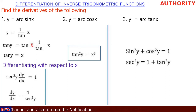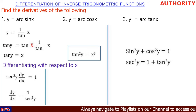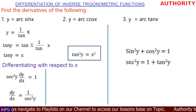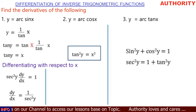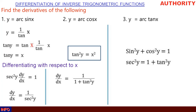Using the identity sin²(y) + cos²(y) = 1, if we divide through by cos²(y), we get sec²(y) = 1 + tan²(y). We can replace sec²(y) in our expression: dy/dx equals one over (1 + tan²(y)).